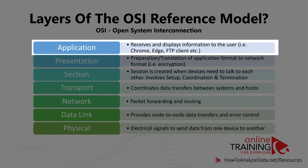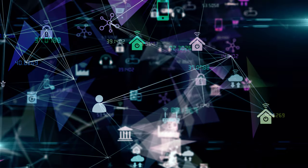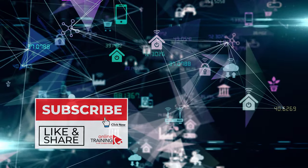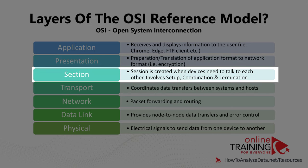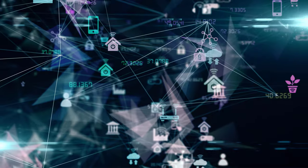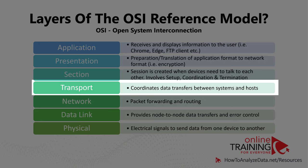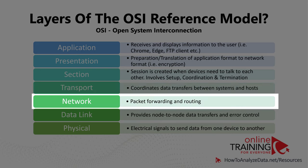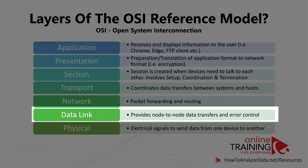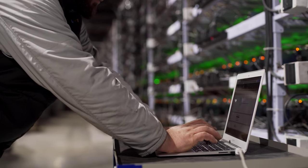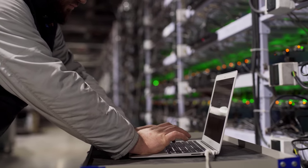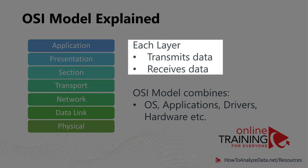The application layer enables user interactions with internet-connected applications, for example a browser or other internet-connected apps. The presentation layer is responsible for translating data from the application layer. The session layer coordinates conversations between applications. The transport layer transfers data between systems and hosts and controls the types of data transferred. The network layer is responsible for moving data through the network. The data link layer enables node-to-node data transfer as well as error control. And the physical layer uses electrical signals to send data from one device to another, over wired or wireless networks. Each layer in the OSI model transmits data to the layer below and also receives information from the layer above.